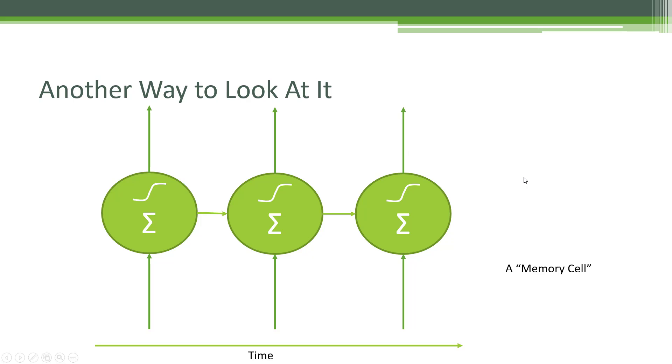This is called a memory cell because it does maintain memory of its previous outputs over time. And you can see that even though it's getting summed together at each time step, over time those earlier behaviors kind of get diluted.